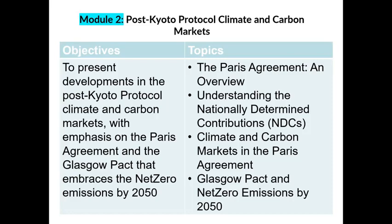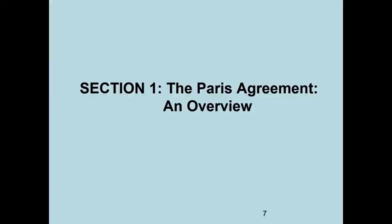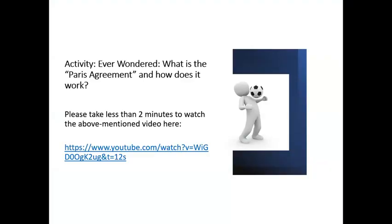The module objective is to present developments in the post-Kyoto Protocol climate and carbon markets, with emphasis on the Paris Agreement and the Glasgow Climate Pact that embraces net zero emissions by 2050. Topics include the Paris Agreement and Overview, Understanding the Nationally Determined Contributions, Climate and Carbon Markets in the Paris Agreement — that is Article 6 — and the Glasgow Climate Pact and net zero emissions by 2050. Let's now move on to Section 1, the Paris Agreement and Overview.